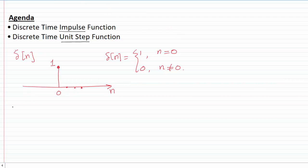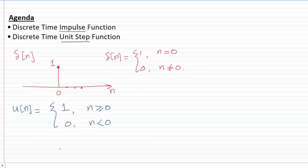Now for the case of the unit step function, the symbol is u of n. We define the unit step function as follows: it's going to take a value of one for non-negative values of n, and it's going to take a value of zero for negative values of n. If I plot the unit step function, it's going to have a value of one at all non-negative values of n, and a value of zero for all negative n.